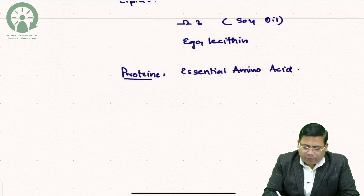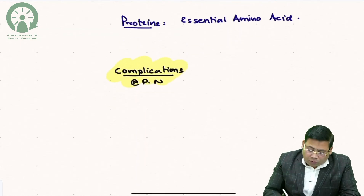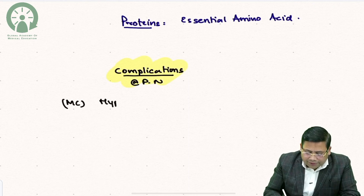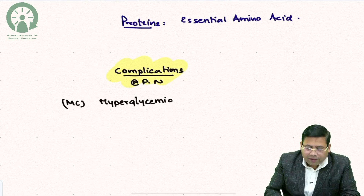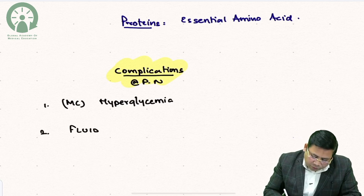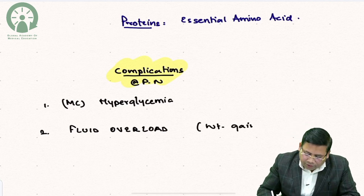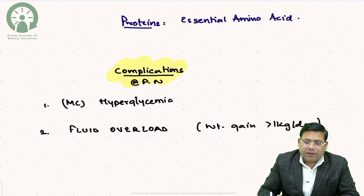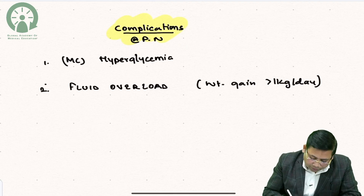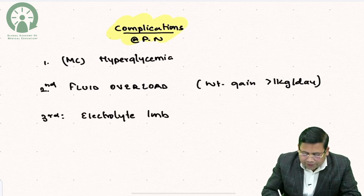Complications of parenteral nutrition: the most common is hyperglycemia, which is why insulin is included in the formulation. Insulin-mediated influx of potassium into cells also causes hypokalemia. The second most common complication is fluid overload, manifesting as weight gain. The criterion for significant fluid overload is weight gain of more than 1 kg per day.